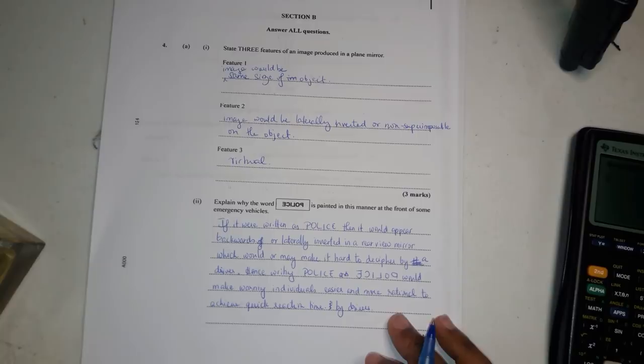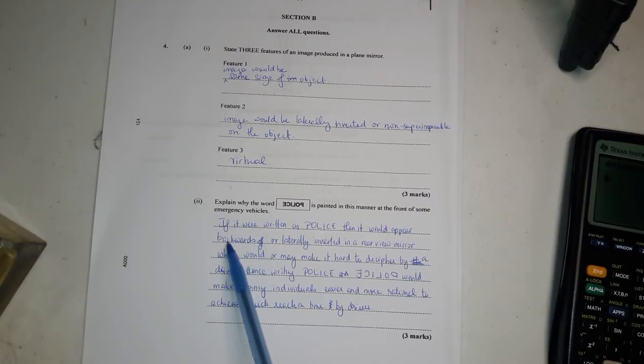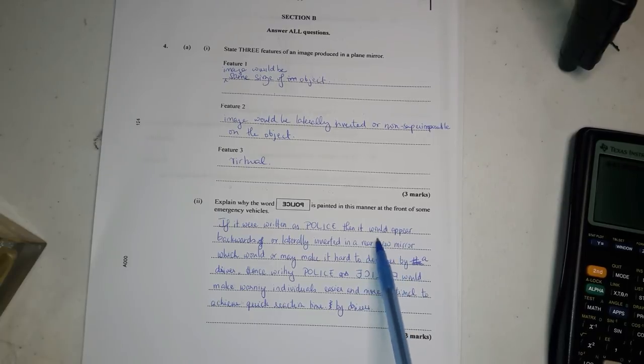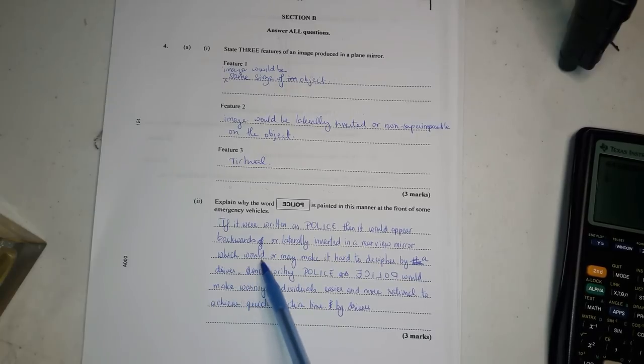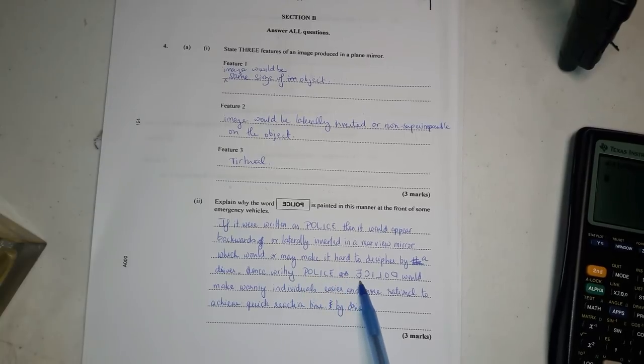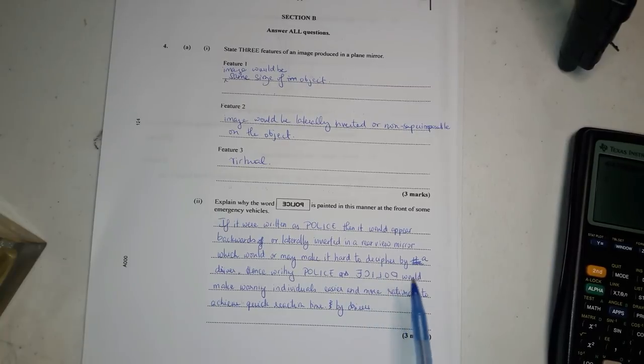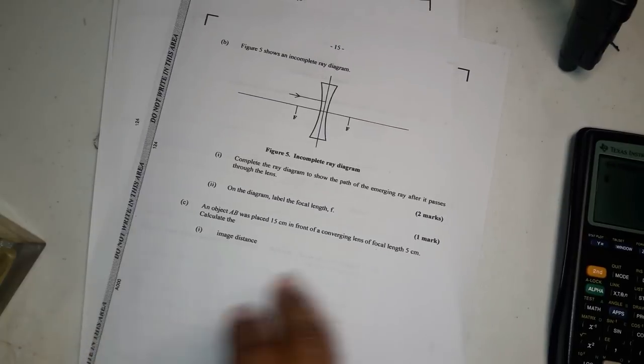Now, explain why the word police is painted in this manner in front of some emergency vehicles. So, I wrote this to try to make some sense. If it were written as police, then it would appear backwards or laterally inverted in a rear view mirror, which would or may make it hard to decipher by a driver. Hence, writing police as this would make warning individuals easier and more rational to achieve quicker reaction time by drivers.